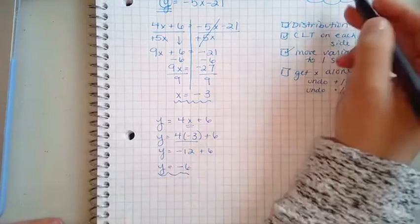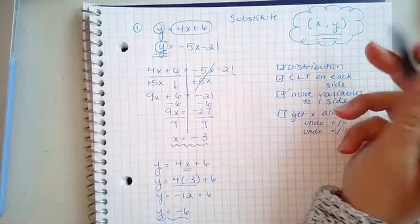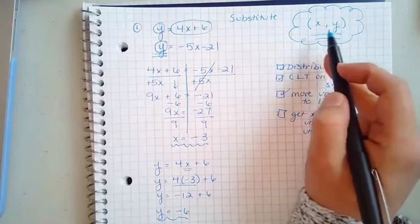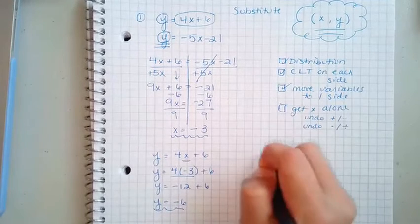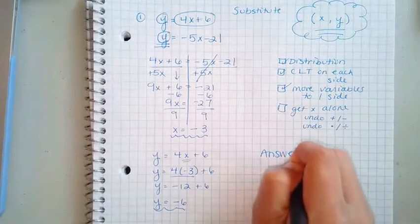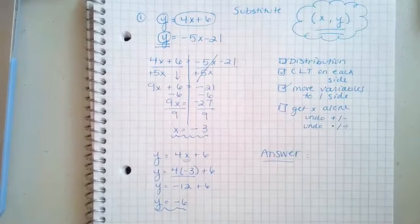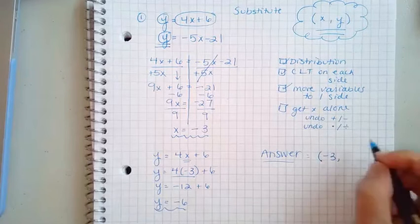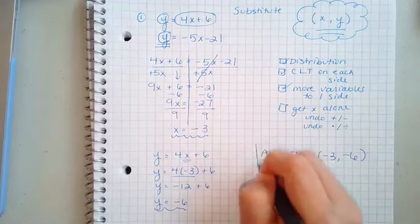Okay, that's good. So now if I think about my whole goal, my whole goal was to find what my X and Y is. Guess what? I've done it, except I have to write my final answer. And when I write my final answer, I get my X value, which is negative 3, and I get my Y value, which is negative 6.